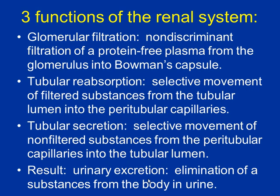Just like the GI tract had four primary functions, the renal system has three primary functions you must know. The first is glomerular filtration — it happens at the glomerulus. Filtration means moving things out of the blood. This is non-discriminate — it doesn't care what it moves. There are no transporters; it's just like a strainer in your kitchen. If you put salt in your pasta water and dump it through a strainer, the salt goes right out.